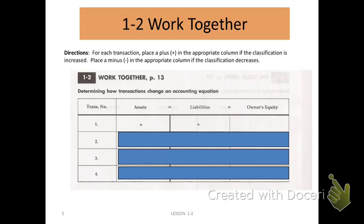So in this situation, our asset increased because we bought supplies, and our liability increased because we increased how much we now owe to the store. On the left side, we had an increase, and on the right side, we have an increase. That means the accounting equation is still in balance — something affected the left and the right by the same amount.